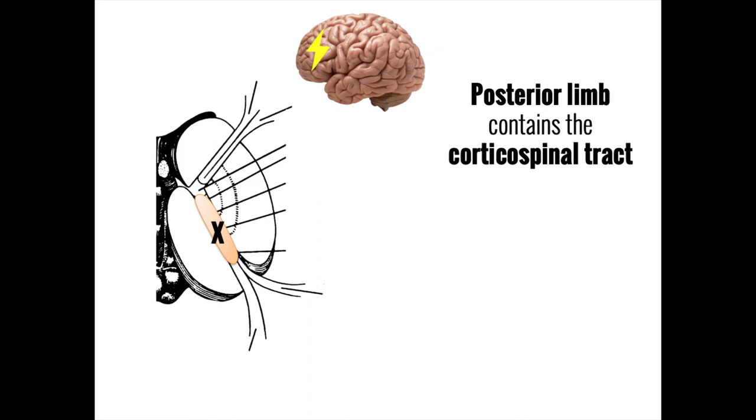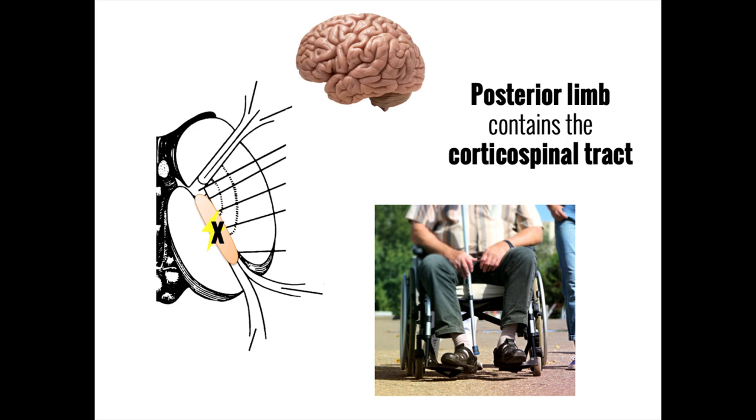For this reason, an injury to the posterior limb of the internal capsule generally results in contralateral hemiparesis, or weakness of muscles on the opposite side of the body, or even hemiplegia, which is complete loss of movement, as in someone who is paraplegic or quadriplegic.